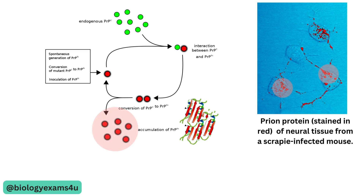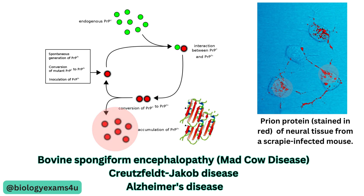Prions are linked with many diseases, such as bovine spongiform encephalopathy or mad cow disease, Creutzfeldt-Jakob disease, and even Alzheimer's disease.